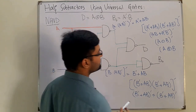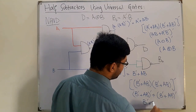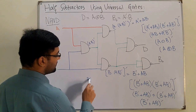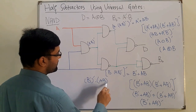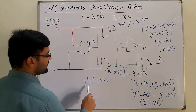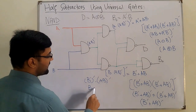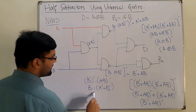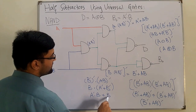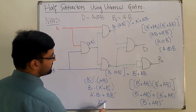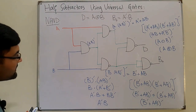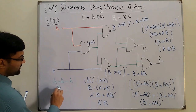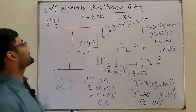We can write it as (B' + AB)'. Applying De Morgan's law: B complement-complement · (AB)' = B · (A' + B') = A'B + B·B'. Since B·B' = 0, we get A'B, which is the borrow. The properties used in this proof are: A + A = A, and A · A' = 0. So that's the half subtractor using NAND gates.